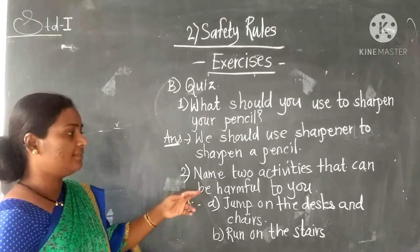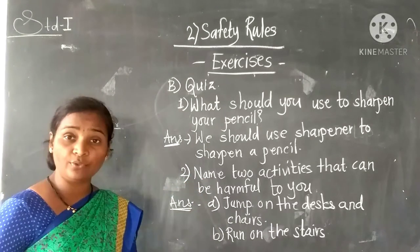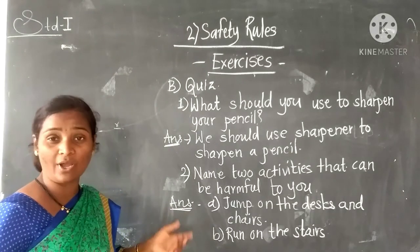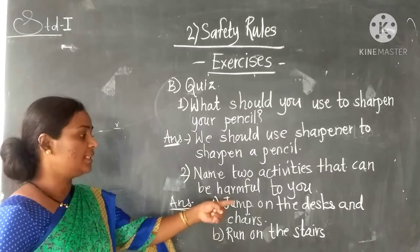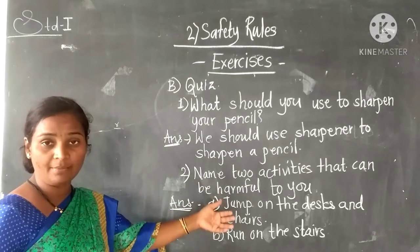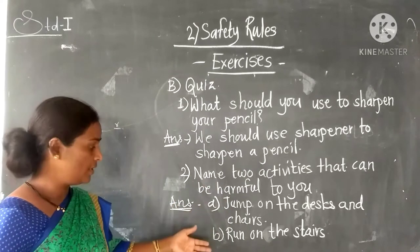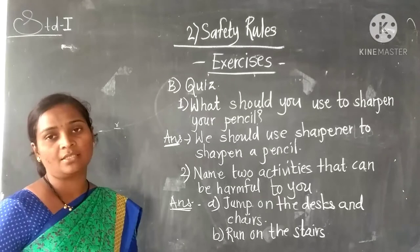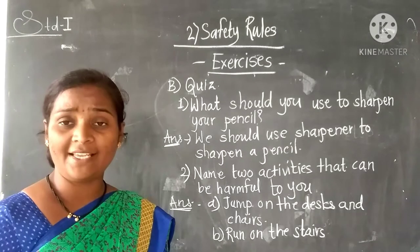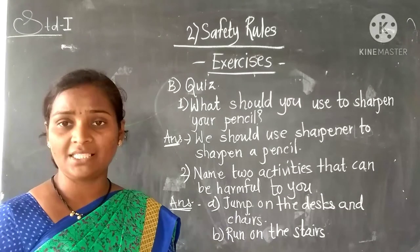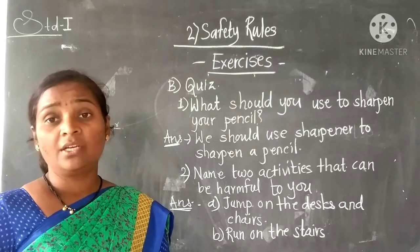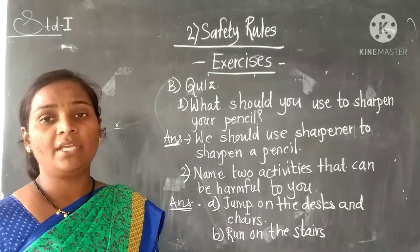Second quiz question: name two activities that can be harmful to you. There are many activities, but you have to write two. For example: jumping on desks and chairs — you may get hurt. Running on the stairs. Playing with sharp edges. Playing with mastic. Running across the road. You can write these main activities.